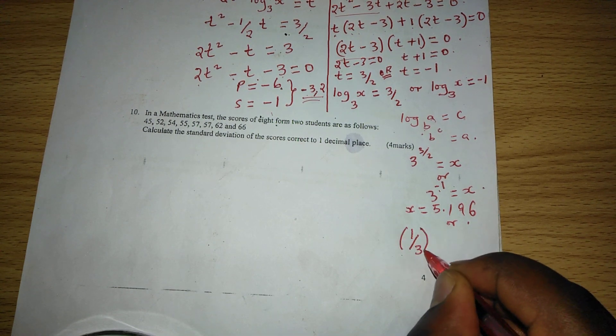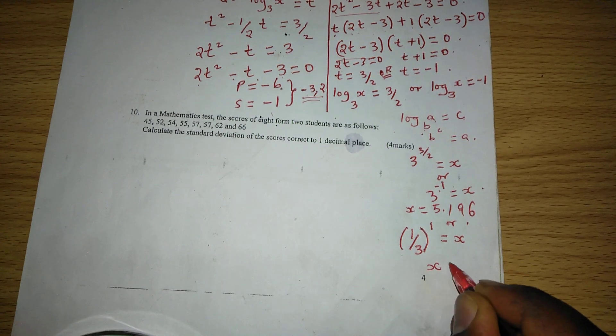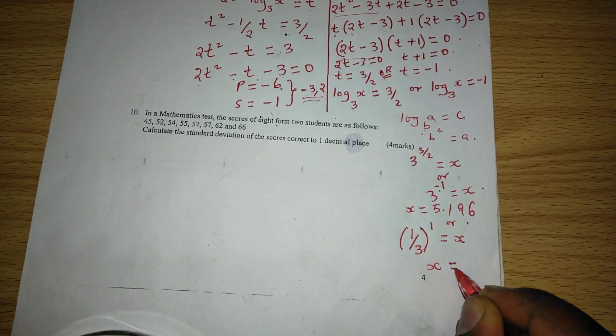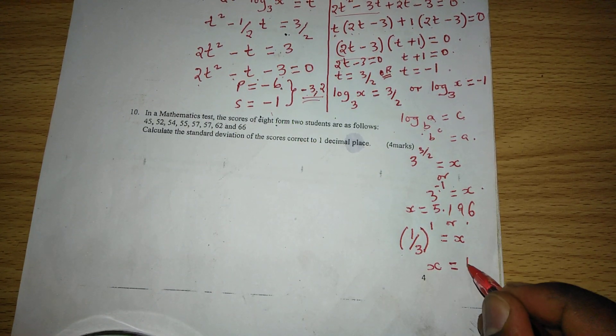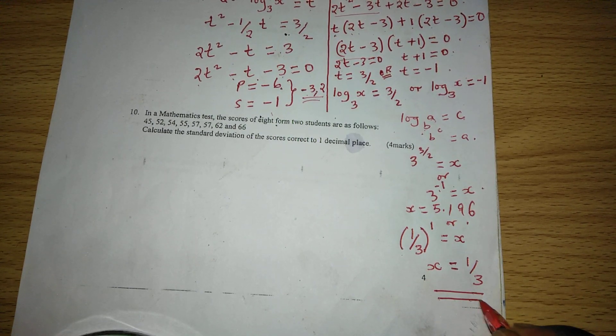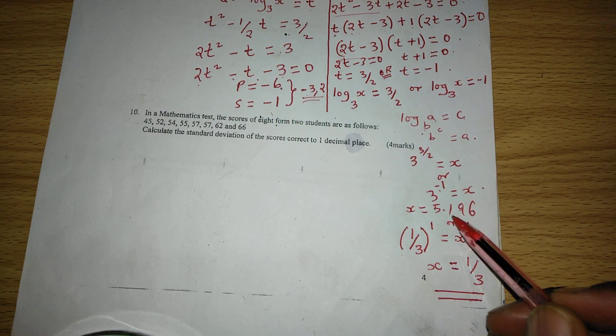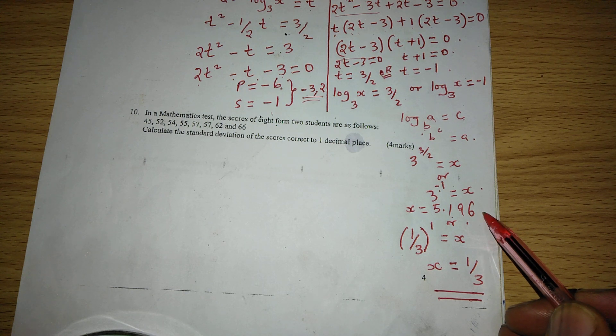Instead of 3, we have a third, and the power becomes positive. Therefore, x equals 1 out of 3 raised to 1, which makes it a third. Therefore, x is taking two roots here. x is either a third, or x is equal to 5.196.